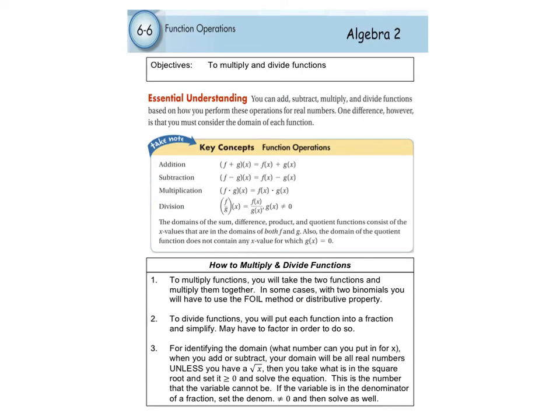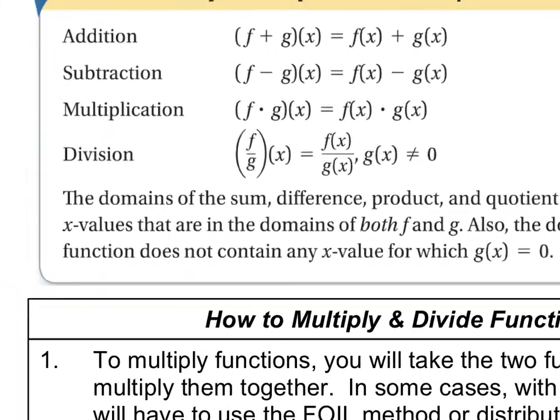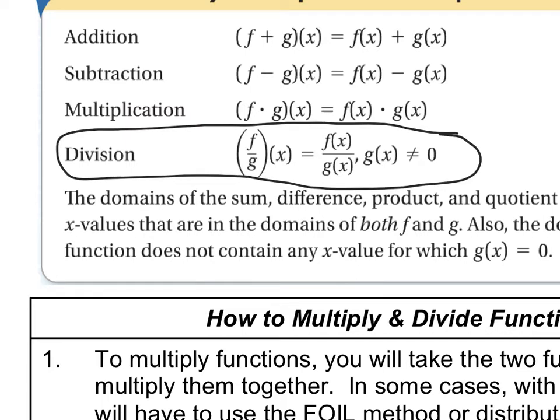Okay this is 6.6, we're still in day two and on this video we're going to talk about division. So we are looking at the division of functions notation. We're going to take two functions f of x and g of x and divide them. In this case f will go on top and g will go on the bottom, or we're going to make it look like f of x divided by g of x where f is on the top and g is on the bottom.